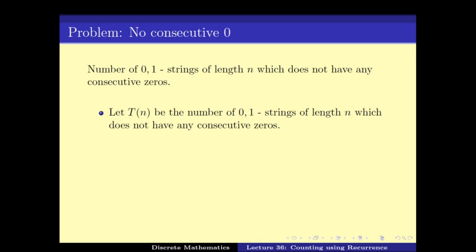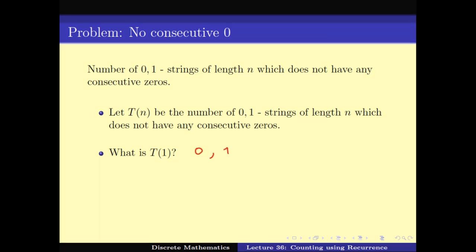T_n is parameterized by n. Can we answer T_n for small values of n? T_1 is the number of 0-1 strings of length 1 that don't contain any consecutive 0. There are two such strings: 0 and 1. So T_1 = 2. For T_2, the valid strings are 01, 10, and 11 — but not 00, since that has consecutive 0s. So the number of strings of length 2 without consecutive 0s is T_2 = 3.